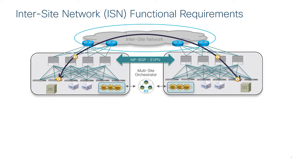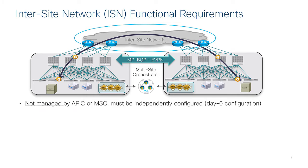Let's start covering some of the functional requirements for the inter-site network. The first point to clarify is the inter-site network is not managed by the APIC controller cluster or by the multi-site orchestrator. The inter-site network represents an extension of the underlay network deployed inside each ACI fabric and must be provisioned as a day-zero configuration task before even connecting the sites to the inter-site network itself.